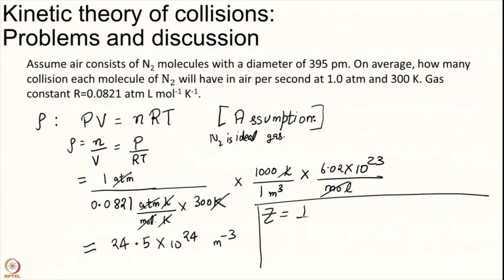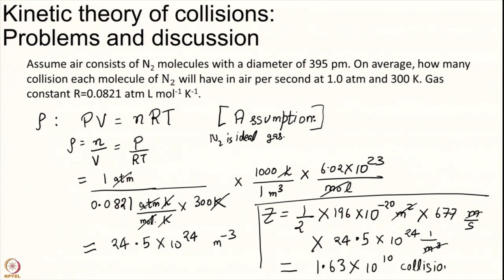Finally, the collision rate is half times σ (196×10⁻²⁰ m²) times thermal speed (677 m/s) times ρ (24.5×10²⁴ m⁻³). Units cancel - meter square with meter cube - giving 1.63×10¹⁰ collisions per second per molecule of N2.